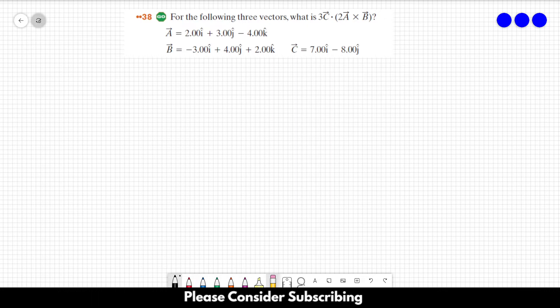Vector B is equal to minus 3 in the I direction plus 4 in the J direction plus 2 in the K direction.